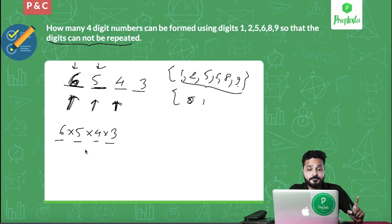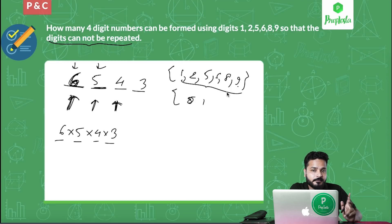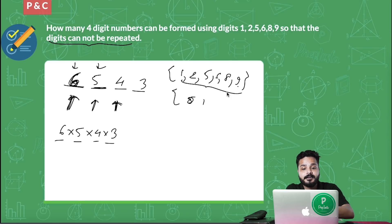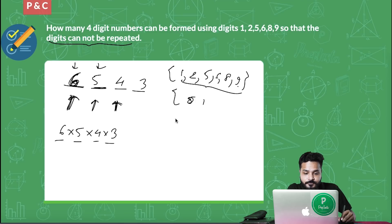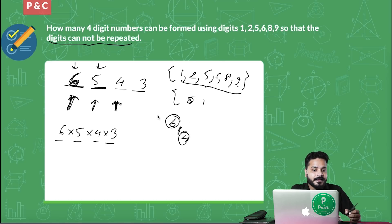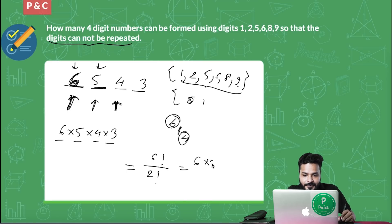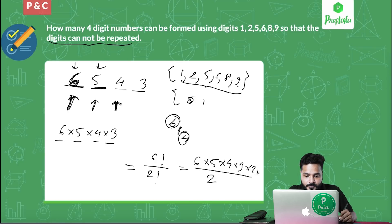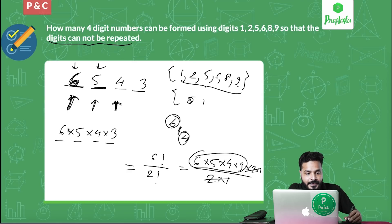The difference between when repetition is allowed and when it's not: when allowed, everything stays available so every position has 6 choices; when not allowed, each use removes one option. So 6 times 5 times 4 times 3 — this can also be written as 6P4, which is 6 factorial upon (6 minus 4) factorial, that is 2 factorial. This simplifies to 6 times 5 times 4 times 3. I always suggest using the positional approach rather than jumping to formulas, because for complex problems with constraints, the formula alone may not be sufficient.